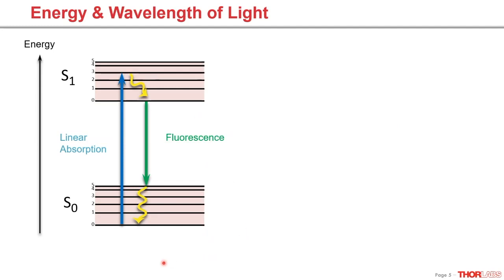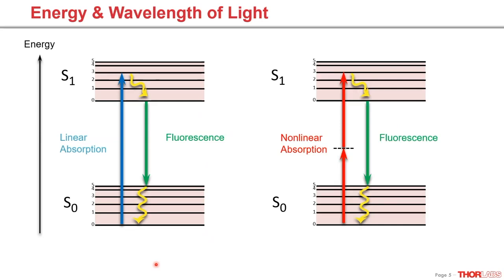What we just described is the process of linear absorption — one photon is absorbed and a subsequent photon is emitted as fluorescence. There is also non-linear absorption, where two photons, each with half the energy of the photon in the linear absorption case, are seen by the substance at the same time. Because it's treated as the exact same absorption energy transition, the same fluorescence photon is emitted subsequently. This process has a lower probability of occurring, so it has tighter limitations, but also has many advantages we will go into in our next webinar.